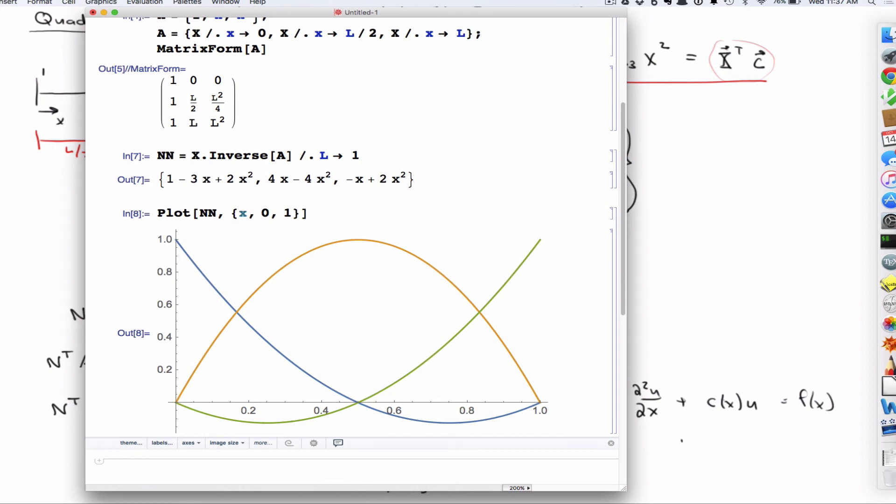at any place along x, the shape functions will add to 1. It's real easy at the nodes, right? At the nodes, these two are 0 and that one's 1. At this node, these two are 0 and that one's 1. But also anywhere else. I mean, let's see. This is maybe about 0.6 or so. And so you have 0.6 plus 0.6, which would be 1.2, but then you have a minus roughly 0.2. So they add to 1. So anywhere they add to 1. We'll give that a name in a second.